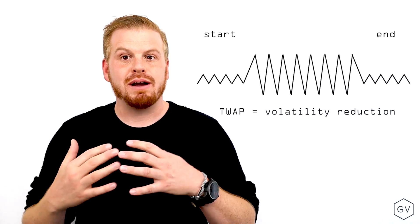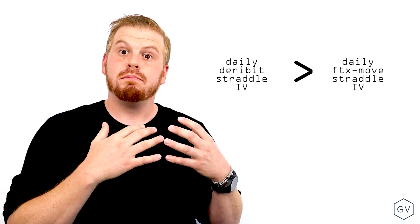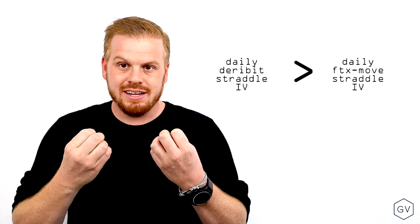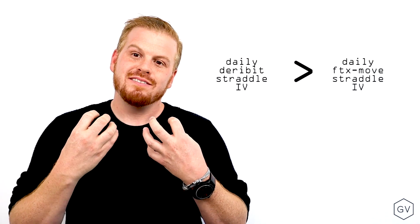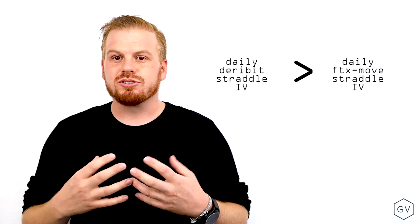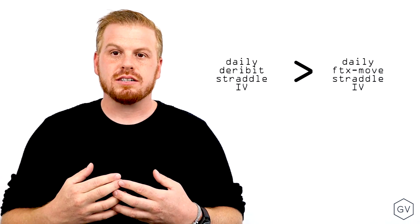you're going to have these tampered down beginning and ending settlement values. So you can't compare the FTX move contract on a daily basis directly to the Deribit Bitcoin straddle. They're going to be quite different because there's going to be a difference in final settlement volatility.